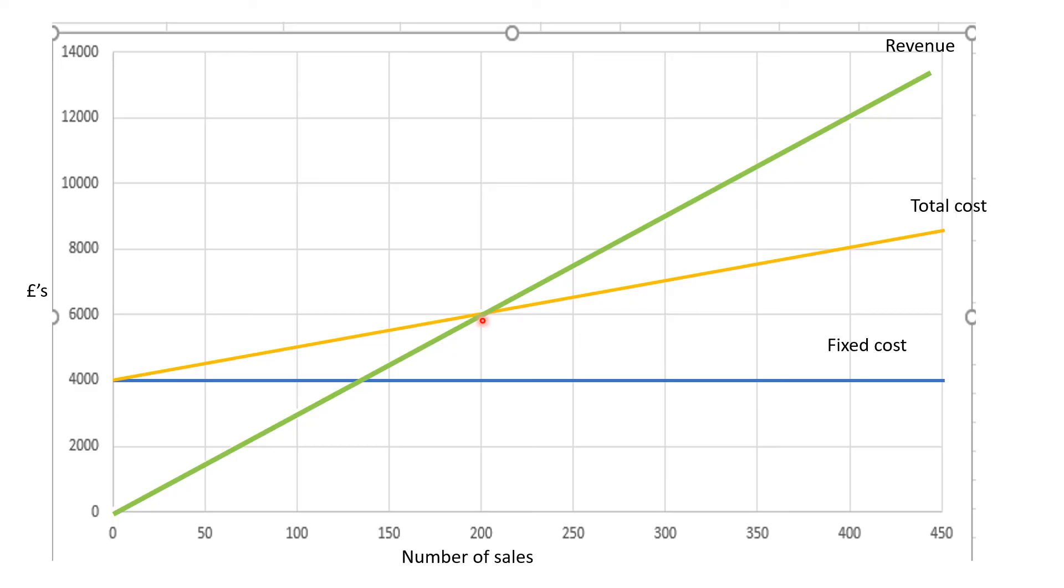So where the two lines cross is where break-even is. So we can see if they sold 200 items, the total cost would be £6,000, the total revenue would be £6,000. They would break even at this point. They would make no profit or no loss.